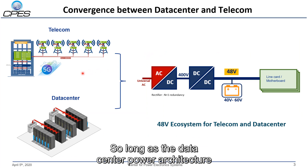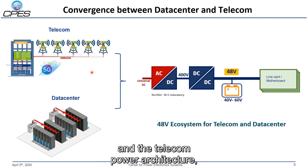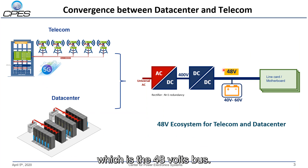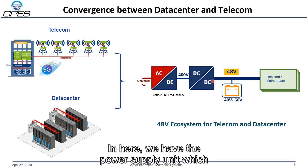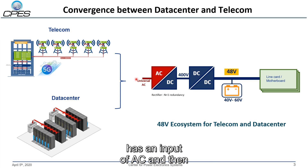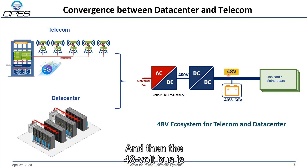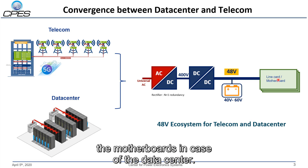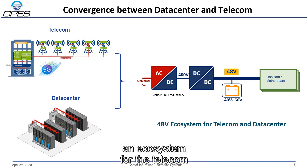Looking at the data center and telecom power architecture, we have been using the 48V bus architecture. Here, the power supply unit has an AC input and rectifies the output to 48V. The 48V bus then supplies the line cards or motherboard in the case of the data center. This 48V bus architecture represents a widely used ecosystem for telecom and data centers.